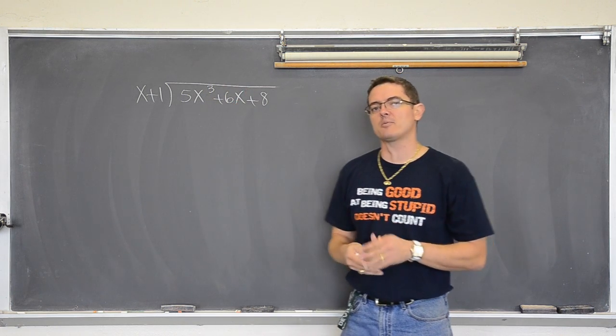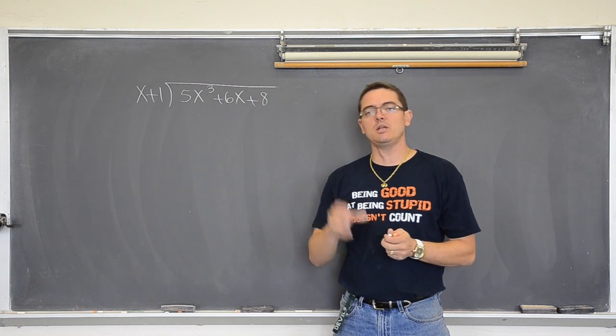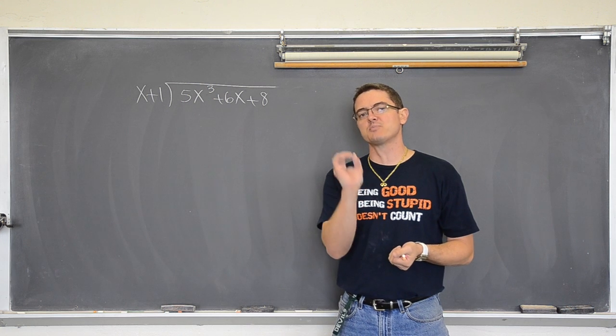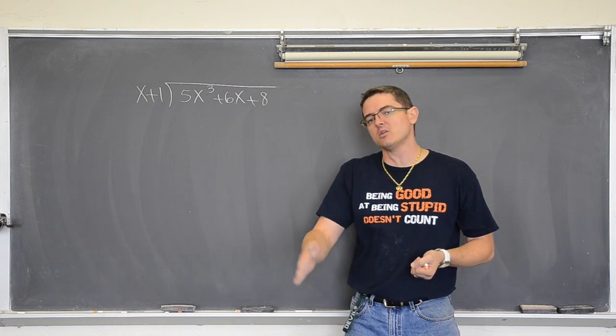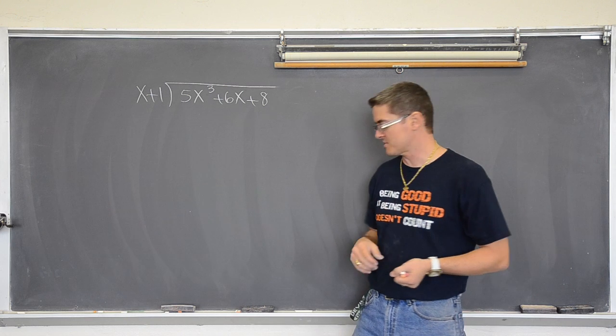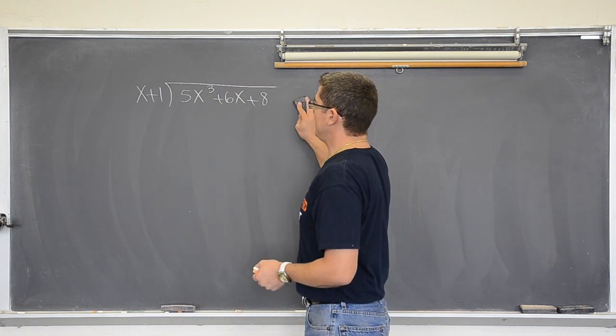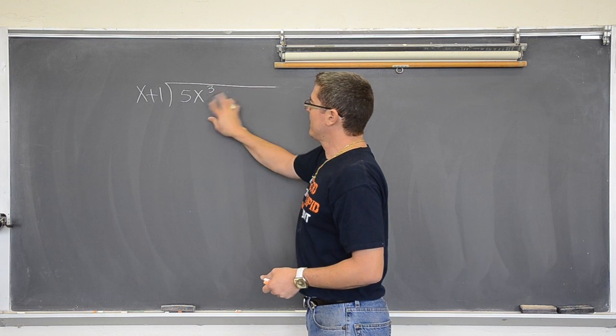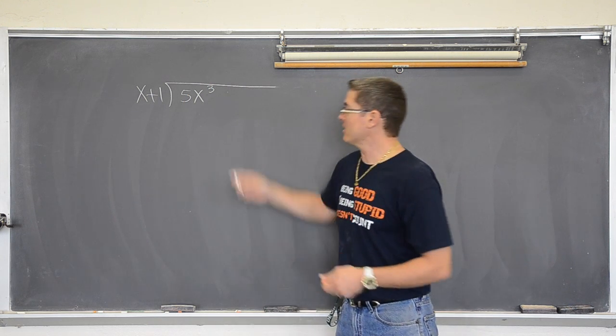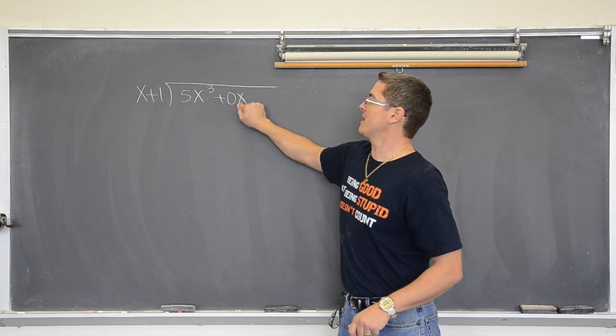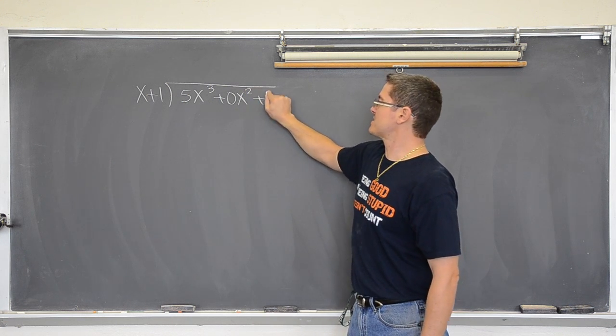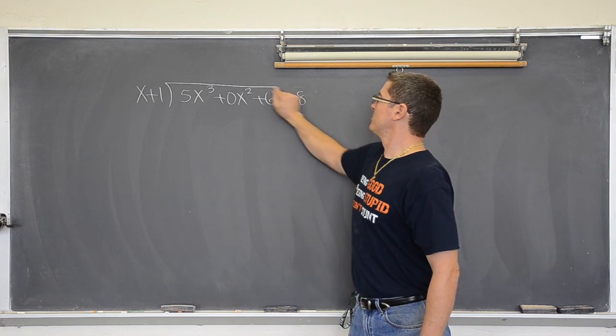If you want to do this properly, whether it is long division or synthetic division, you need to put the zeros in there as placeholders for the exponents so it all lines up in nice columns. That means that this needs to be rewritten as 5x to the third plus 0x squared plus 6x plus 8.